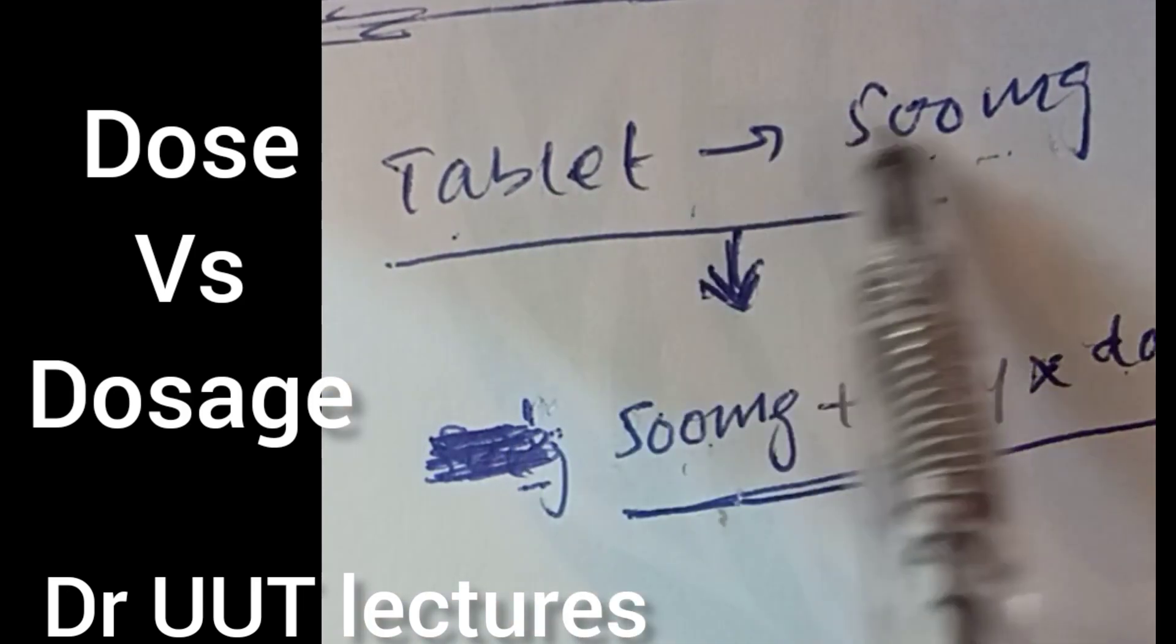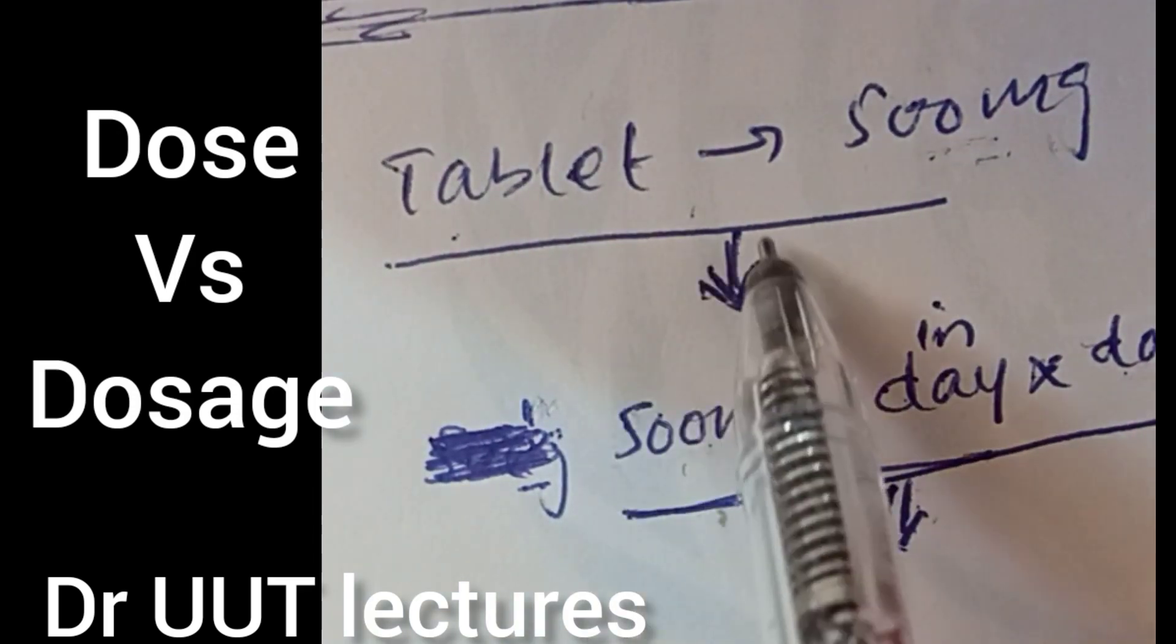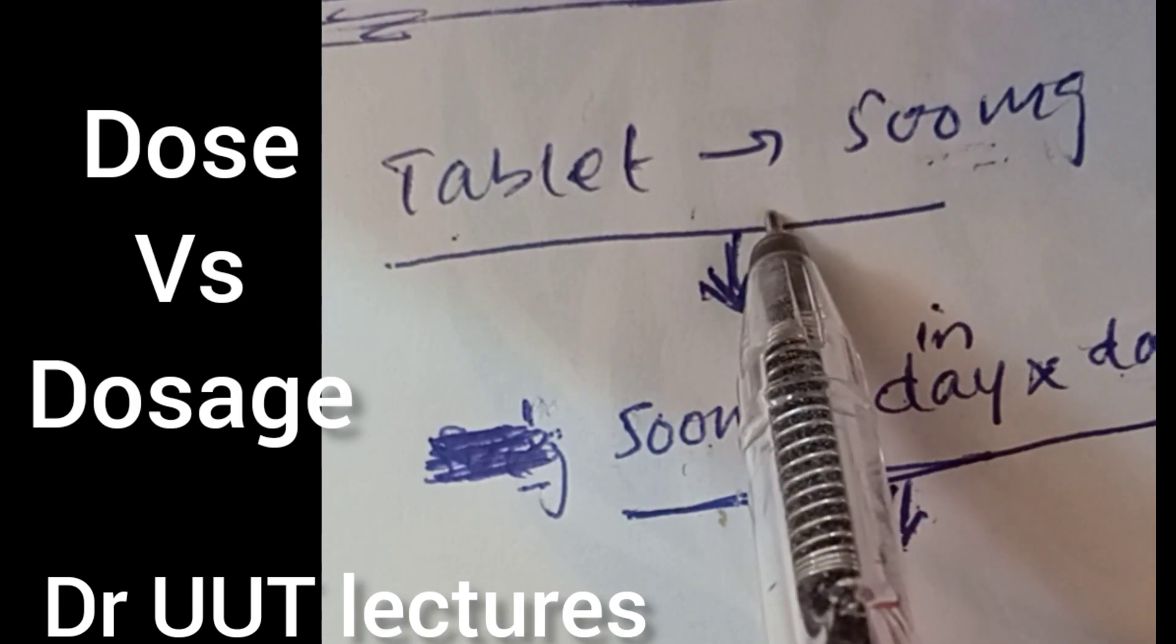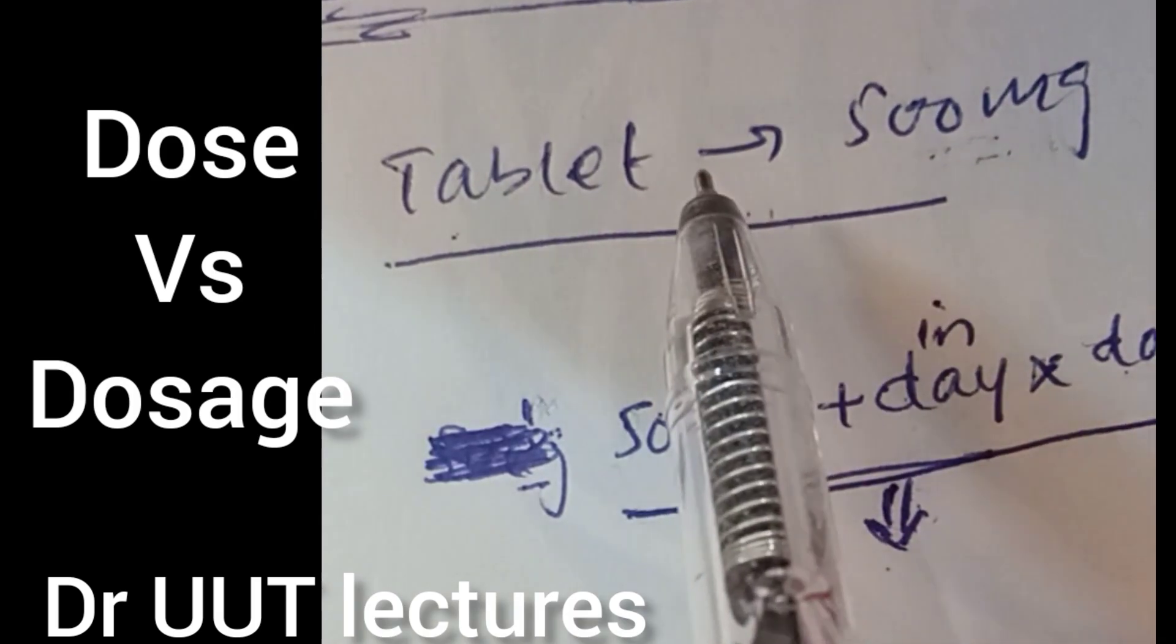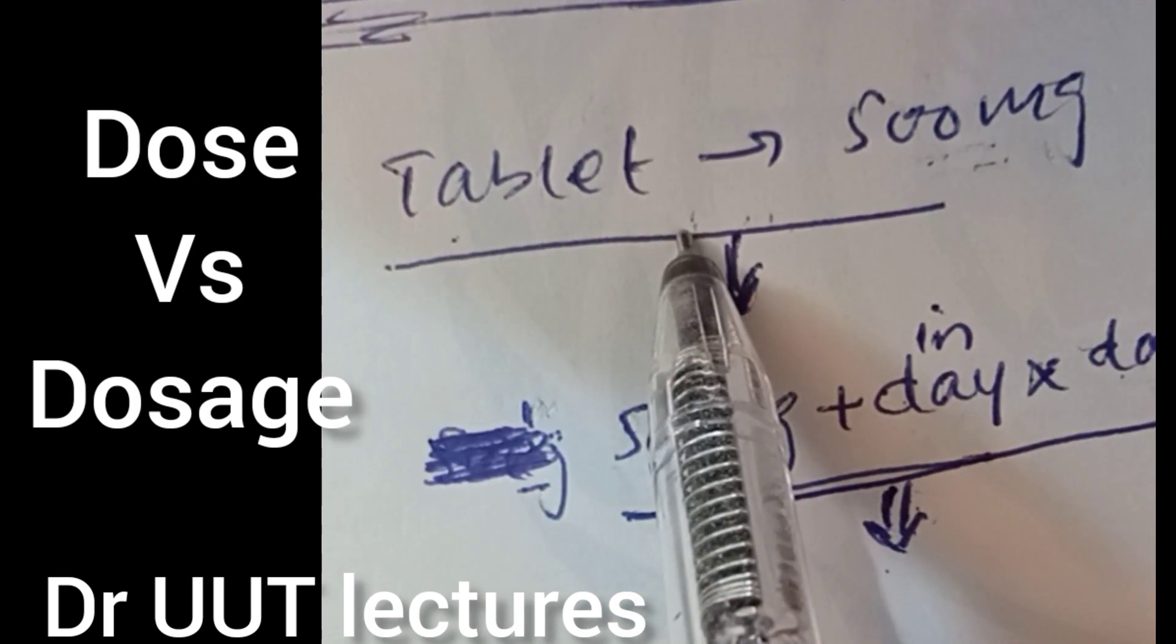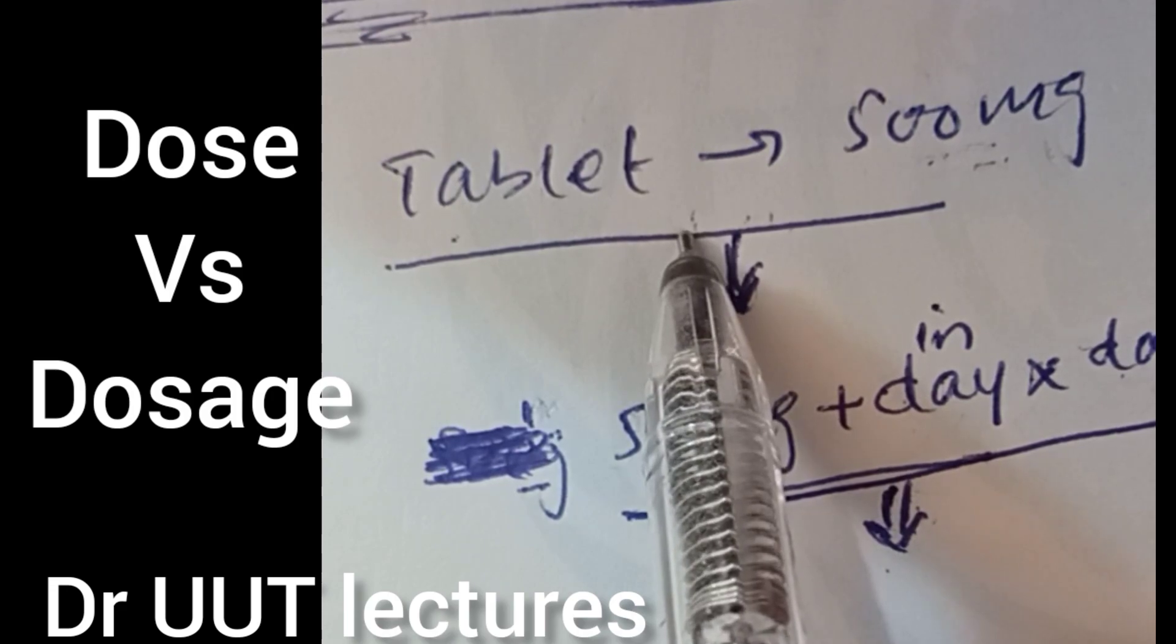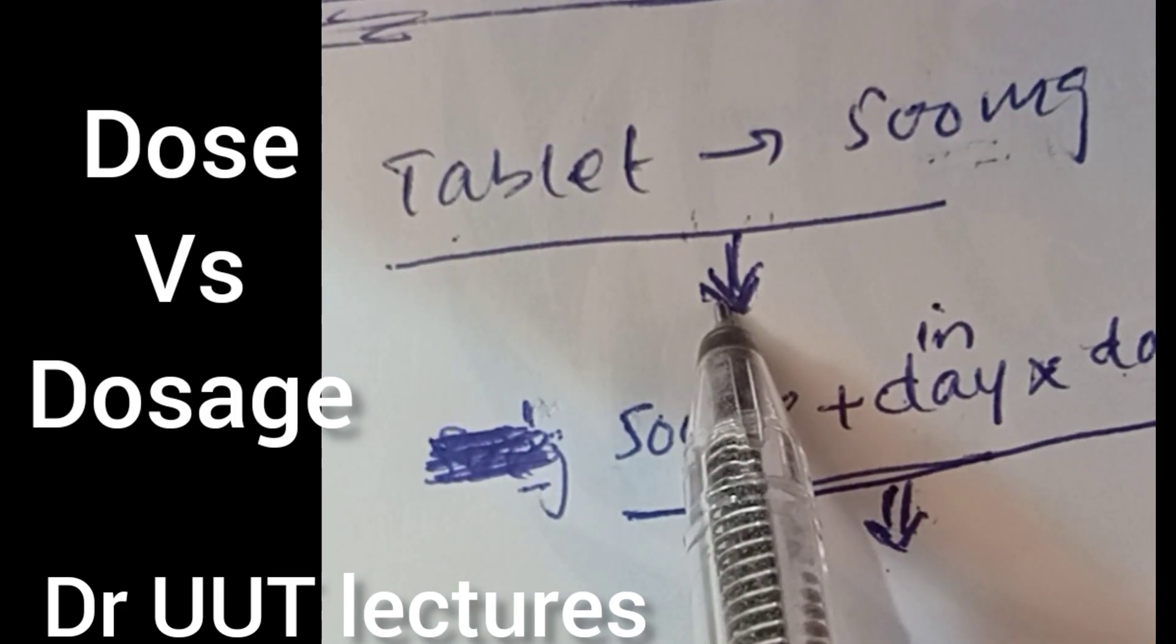The tablet on which 500 mg is written - this is the dose of that tablet. When you take a tablet at a specific time, you are taking the dose of the tablet.